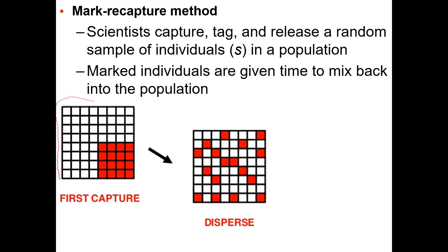Here's how the mark-recapture math works. We have a population, but we can't count them all because these organisms tend to hide. We go out and capture some of them, paint them red or mark them somehow, count them — let's say we have 16 marked individuals — and then let them go. We assume the marked organisms aren't treated differently by others and that they spread back out randomly into the population.